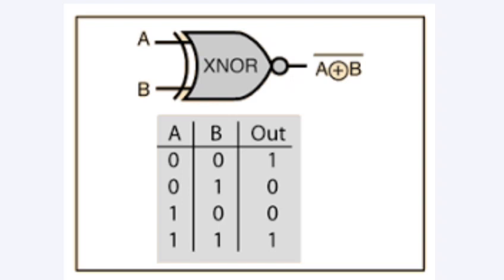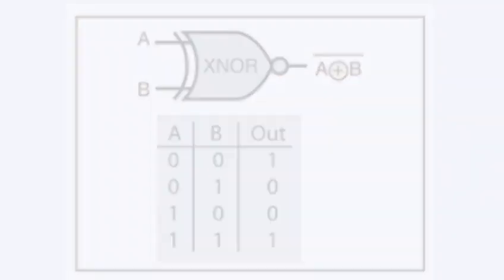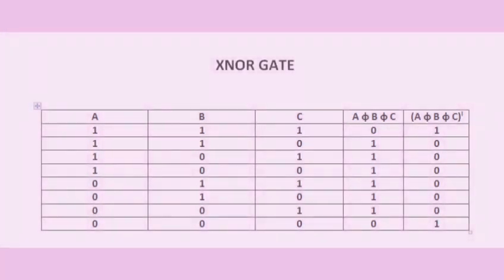Also by definition, the XNOR gate states that the output will be high if all inputs are the same. For example, when you have zero, zero — all inputs are the same — the output is one. The reason is because the inputs are the same, which is the defining behavior of the XNOR gate.